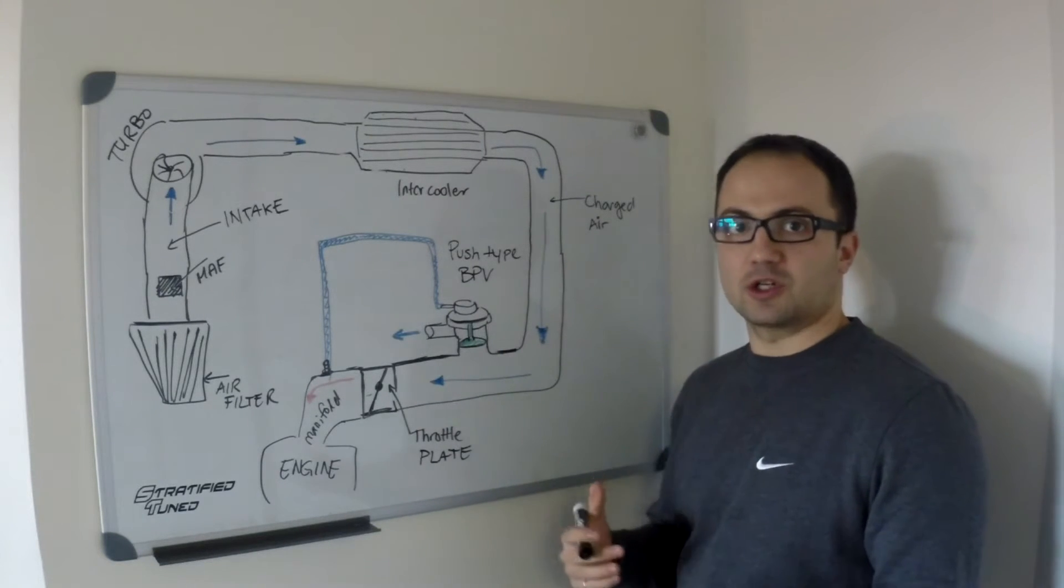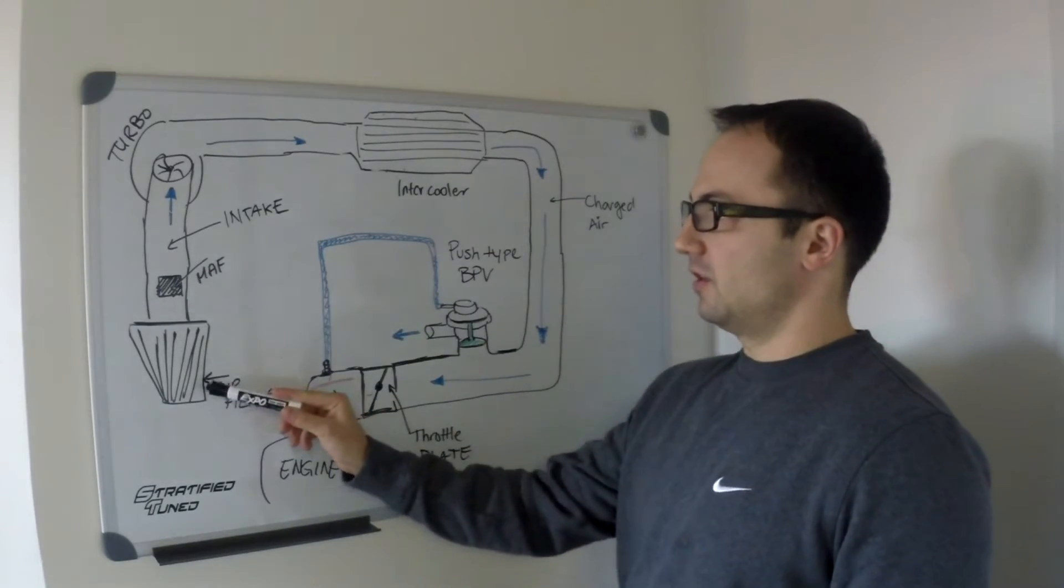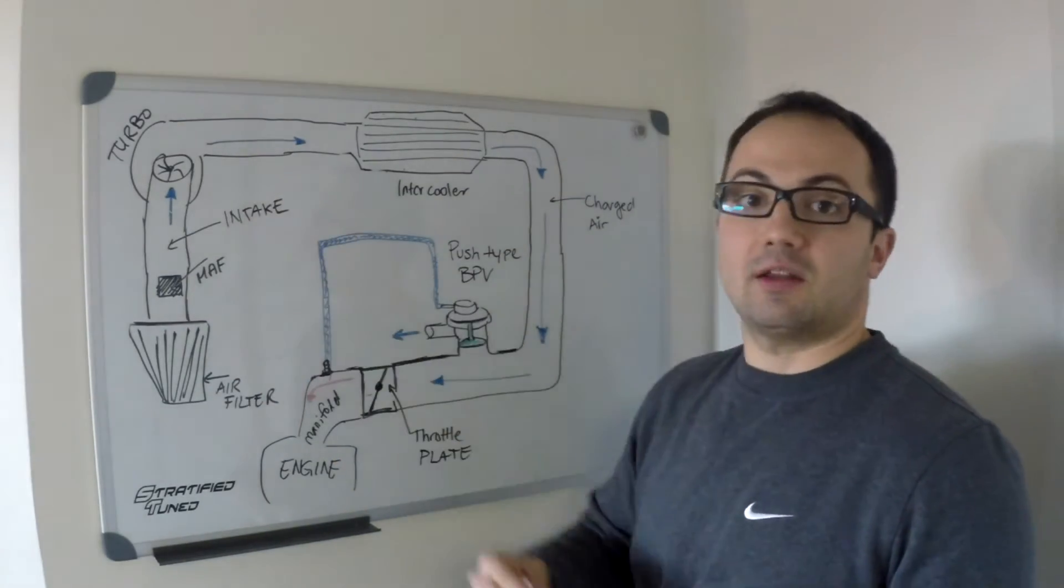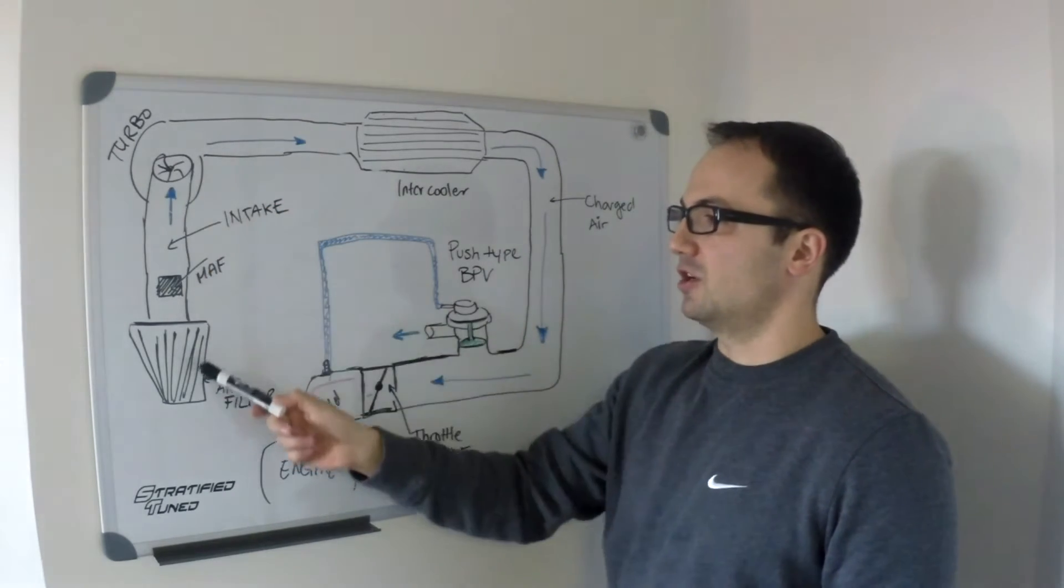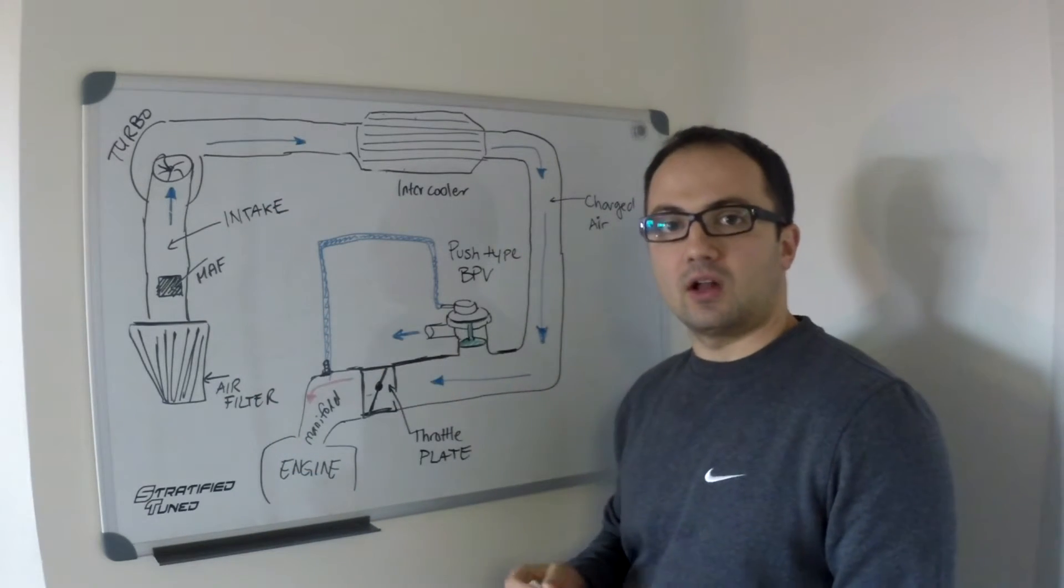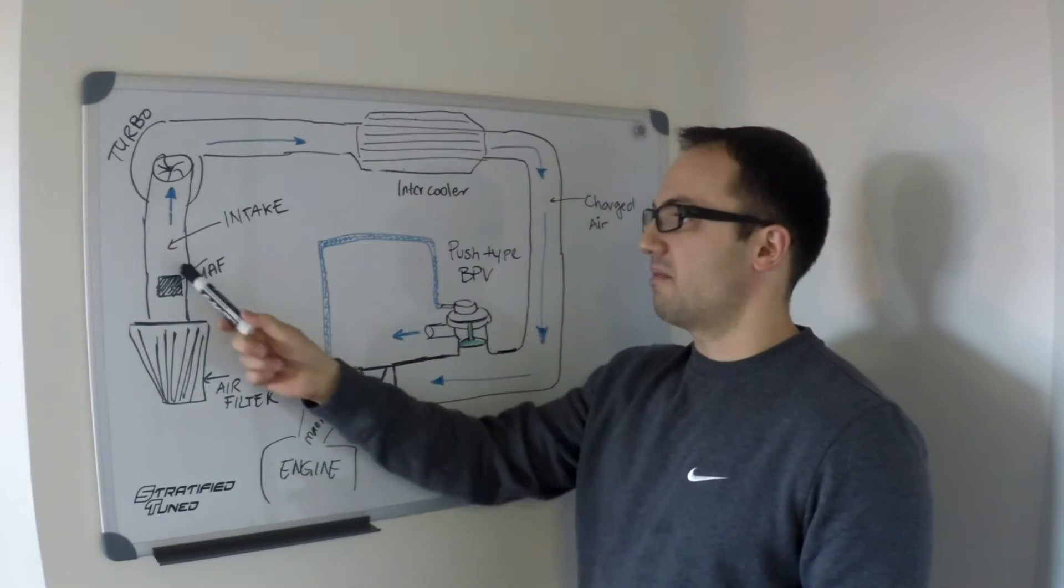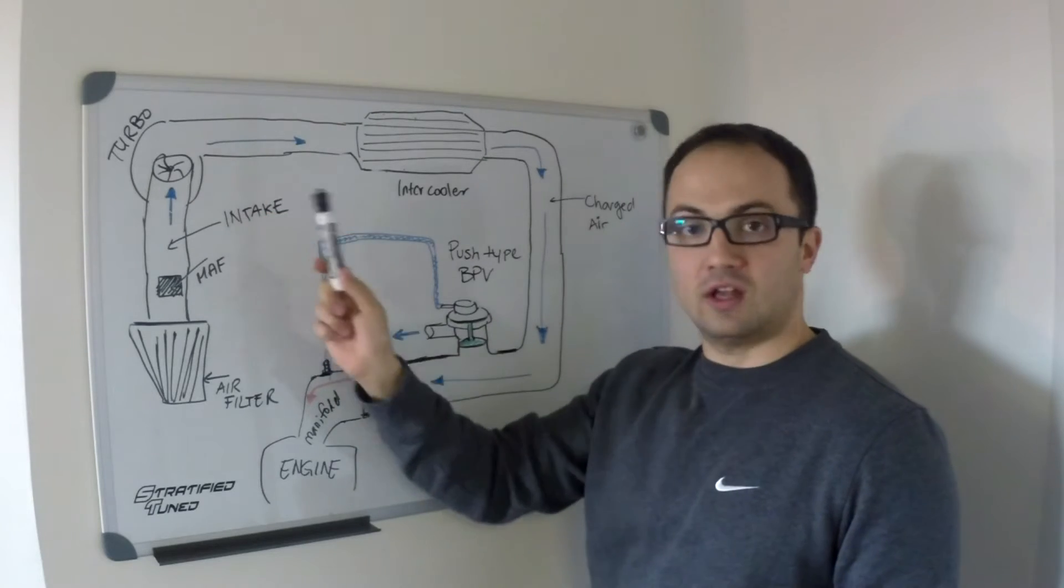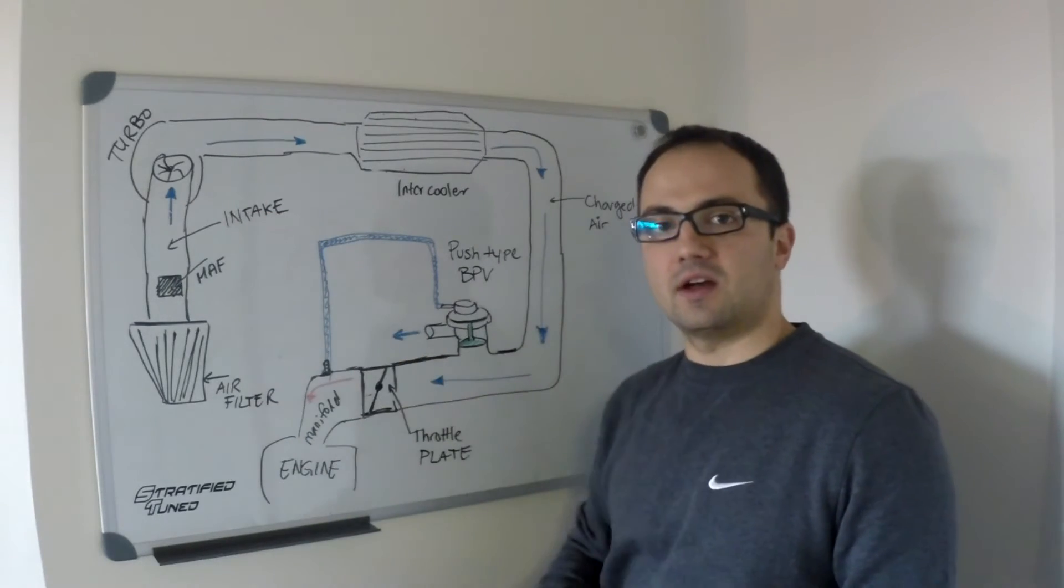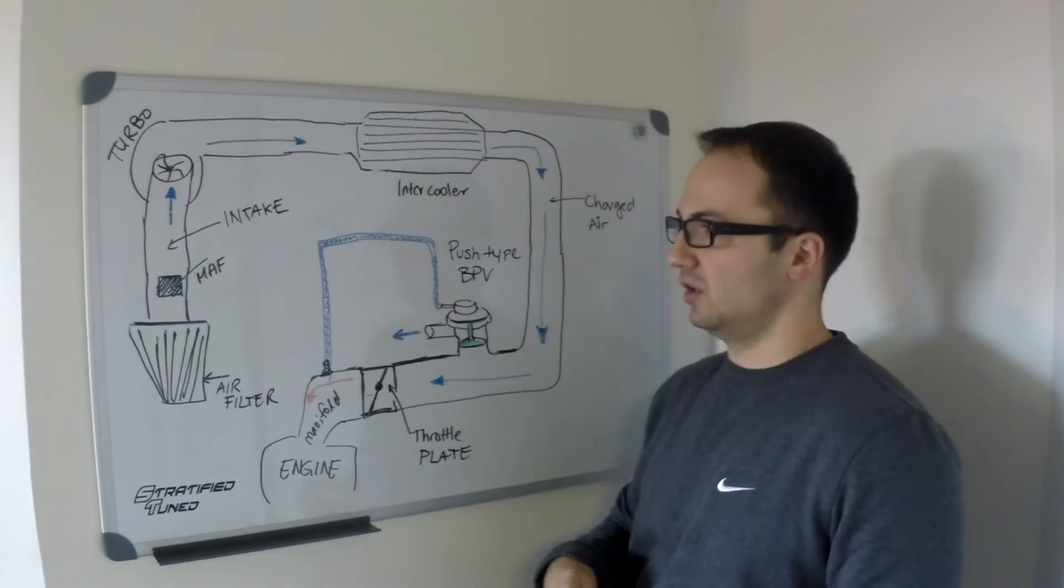First of all, let's go over your basic turbocharger setup. It starts with your air filter. After the air filter, there's an inlet pipe that leads to your compressor inlet of the turbocharger. In this inlet pipe, in a lot of modern cars, you have a mass air flow sensor. This sensor measures the amount of air going into the turbocharger, and that tells the ECU how much fuel to deliver.